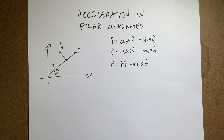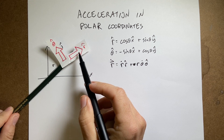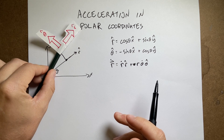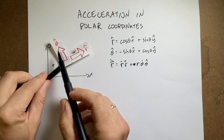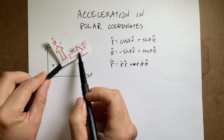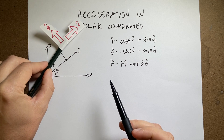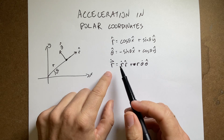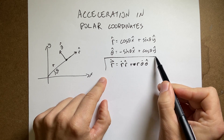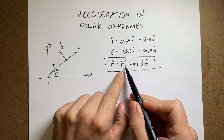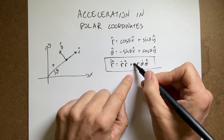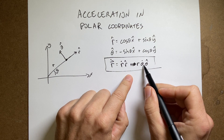In the previous video (link below), I showed that velocity in polar coordinates is tricky because you have to take derivatives of the unit vectors, since the unit vectors are no longer constant. If something is moving in space, the unit vector for r (r-hat) and the unit vector for theta (theta-hat) change direction, so they're not constant with time — when you take the derivatives you get complicated terms. So the velocity in polar coordinates is r-dot r-hat plus r theta-dot theta-hat.